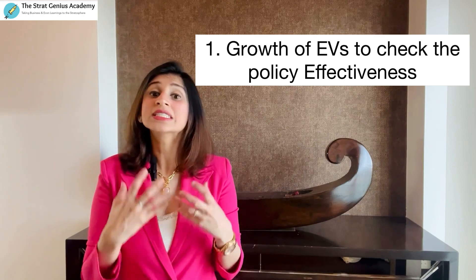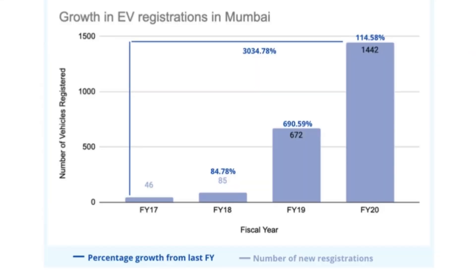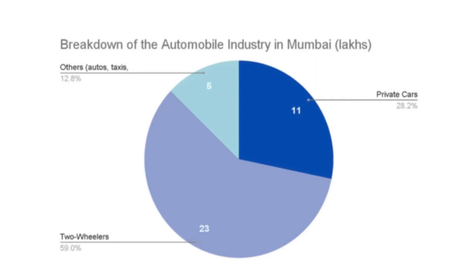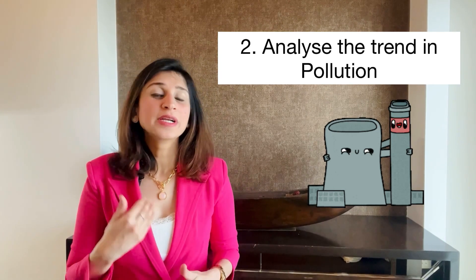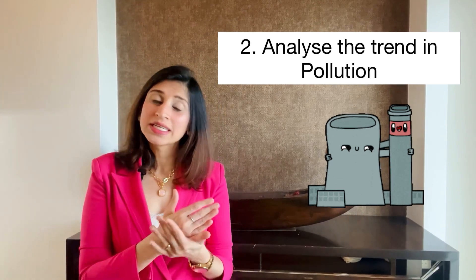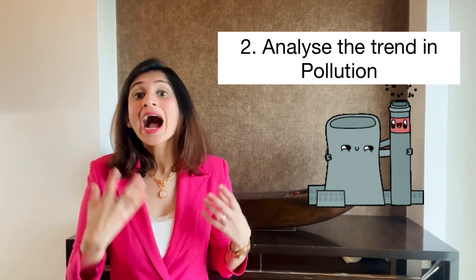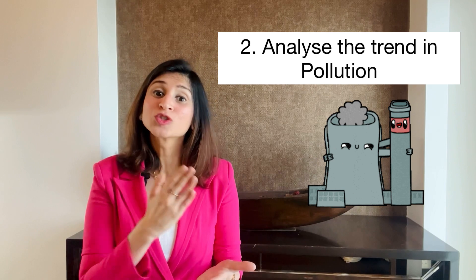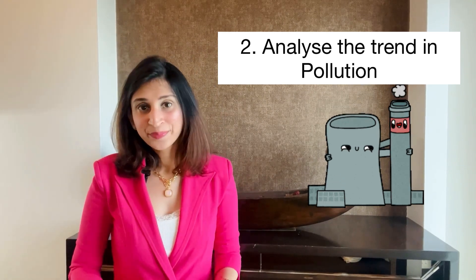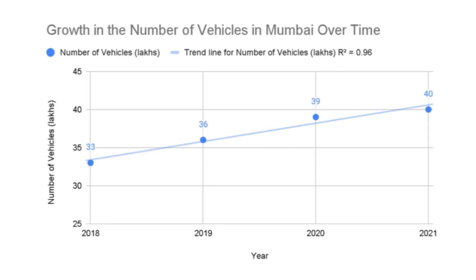Since the FAME policy is relatively new, it is first important to measure the growth of EVs to see if the policy has been effective at all. Analyze the growth in EV registrations in Mumbai over the last five financial years — look at the percentage growth and the growth in new registrations. You can also look at the breakdown of the automobile industry in India to understand what percentage is held by EVs. In the next paragraph, talk about pollution as an external cost over time — to test the hypothesis, measure how pollution has changed in India. You can also do a regression analysis showing the number of vehicles per year and how it is increasing over time.